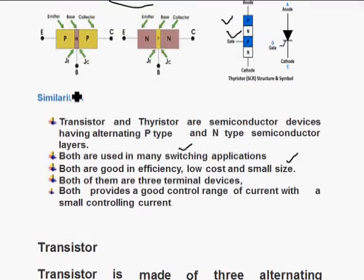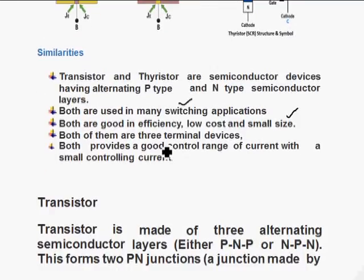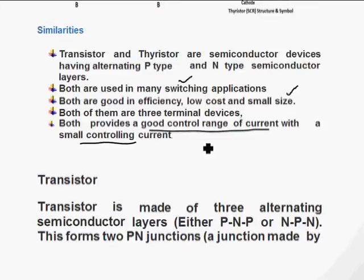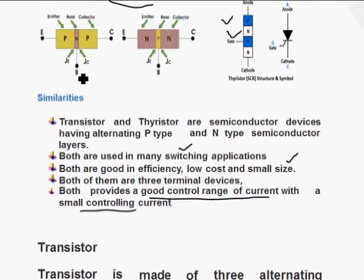And both having three terminals, and both provide a good control over current. And they use a very small current. Like transistor uses a small base current to make the collector current, and SCR uses a very small gate current to make current from anode to cathode.